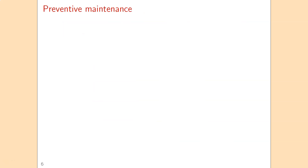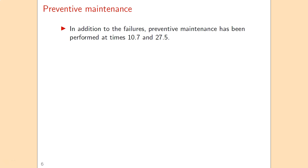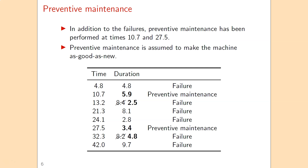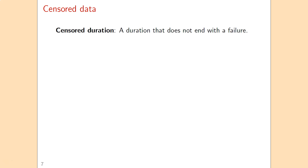However, it turns out that preventive maintenance has also been performed in the past, at times 10.7 and 27.5, and this must be taken into account. We assume preventive maintenance is also perfect, making the machine as good as new. This changes the dataset: for example, we now have a duration from time 4.8 to 10.7, of length 5.9, ending with preventive maintenance. The second time until failure becomes only 2.5 hours instead of 8.4. We now have eight durations in total, two of which end with preventive maintenance.